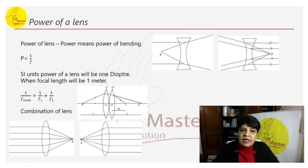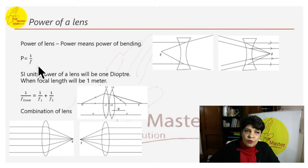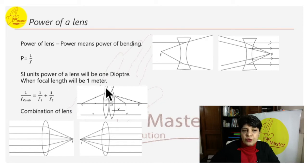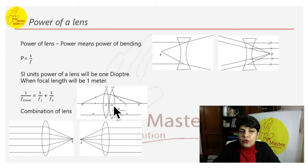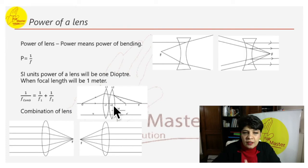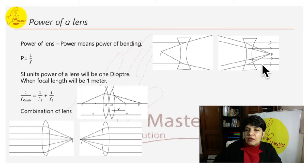Power of a lens means the power of bending — how the lens bends light in concave and convex configurations. The power formula is P = 1/f (focal length in meters). The SI unit of power is the diopter: power equals 1 diopter when focal length is 1 meter. When combining two lenses: 1/f_total = 1/f1 + 1/f2.